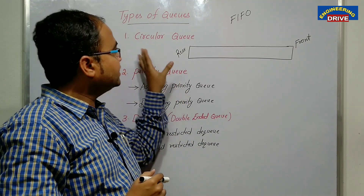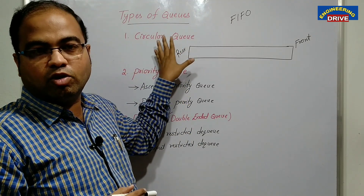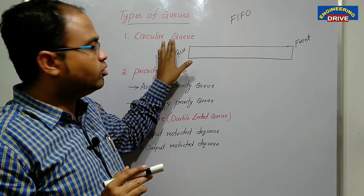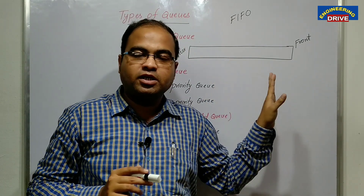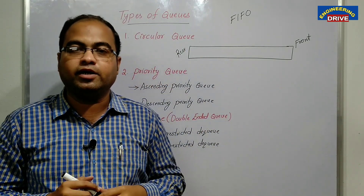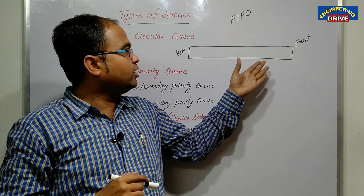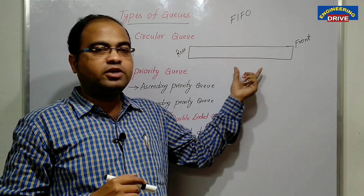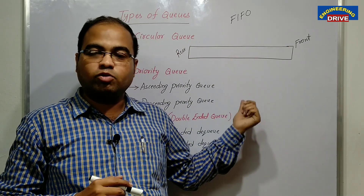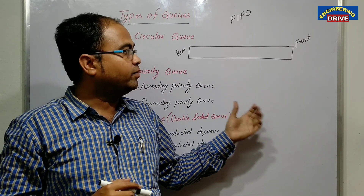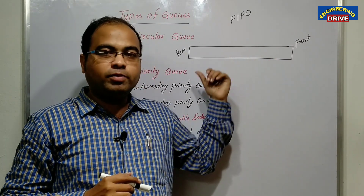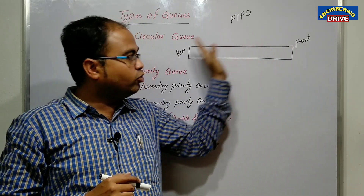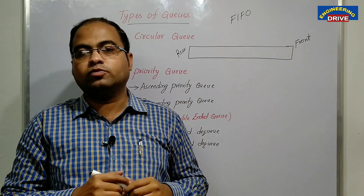Now, what is a circular queue? In the name itself, you might have got some hint. A circular queue is a queue in which there is no end. A normal queue, once you start inserting the elements, will become full. Whereas in a circular queue, if the queue becomes full, the element from the front will get deleted and a new element will be inserted in the same queue.